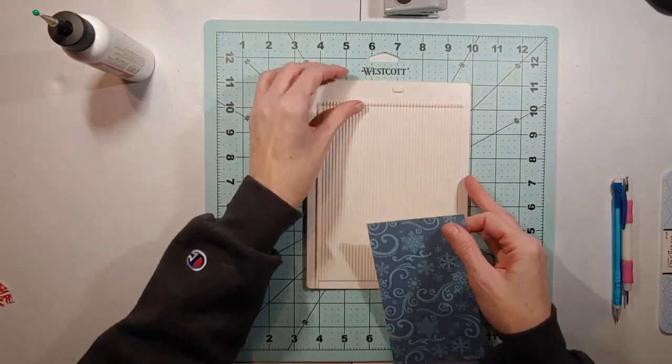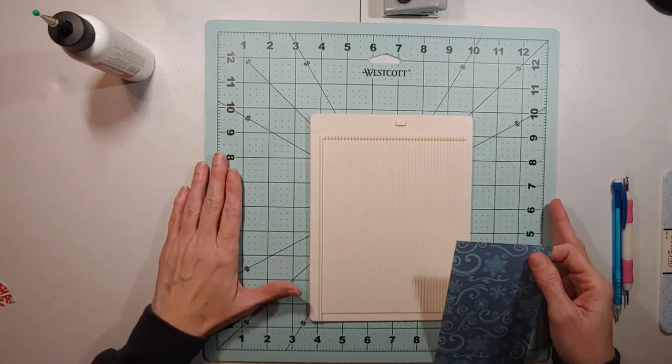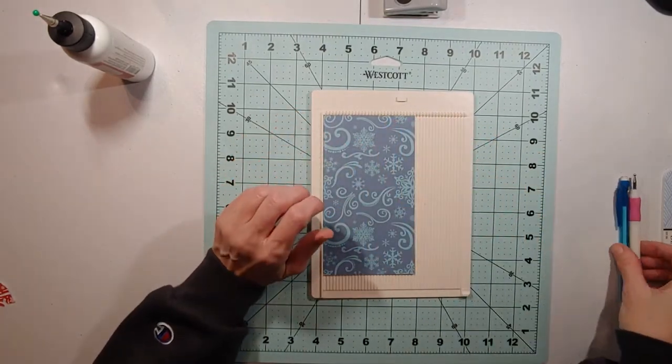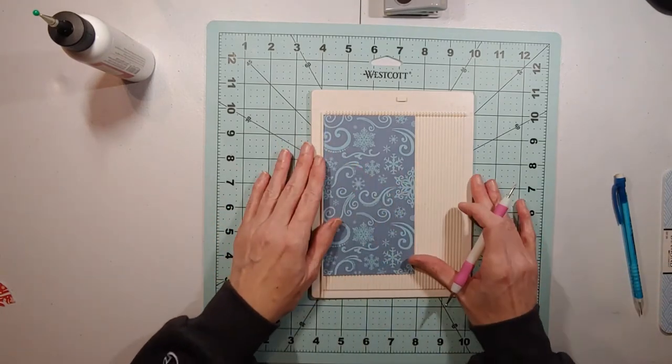Then you just need a scoreboard. You don't need a big one, you can just do a little one. If you have a little one, you can use a big one. But if you have a little scoreboard, you can use your little one.